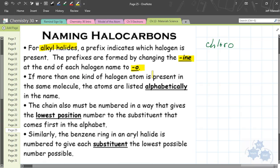If more than one kind of halogen is present in the same molecule, the atoms are listed alphabetically. So if you have chlorine and fluorine attached to the same carbon chain, then you would name chlorine first because it comes alphabetically first.